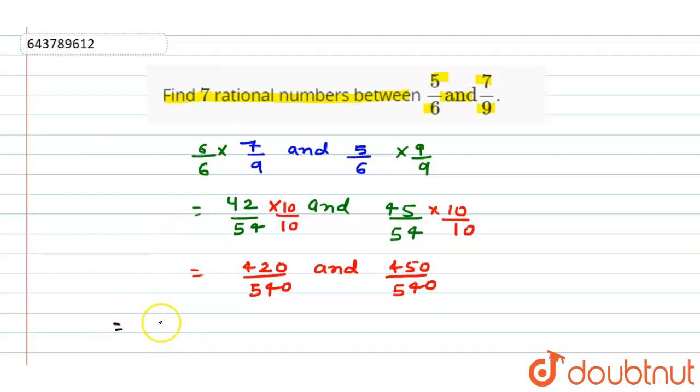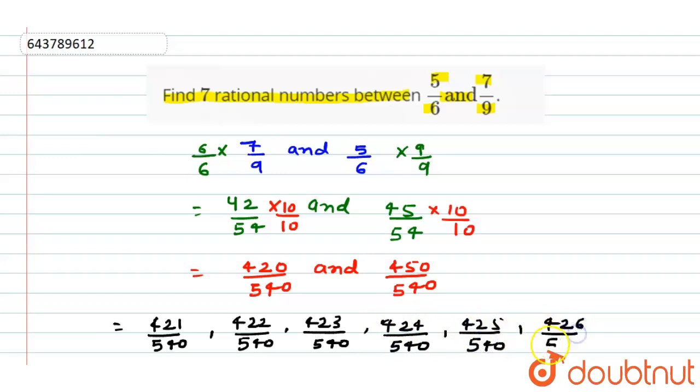For writing seven rational numbers: 421/540, 422/540, 423/540, 424/540, 425/540, 426/540.